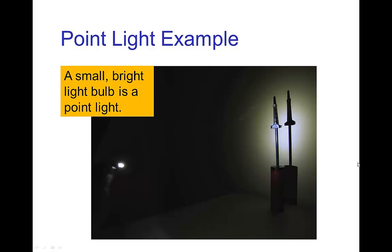Here's a photo of an example of something which is approximately a point light source. There's a small bright light bulb, and you see the cast shadow from that light bulb is all umbra, it's all dark and sharp.